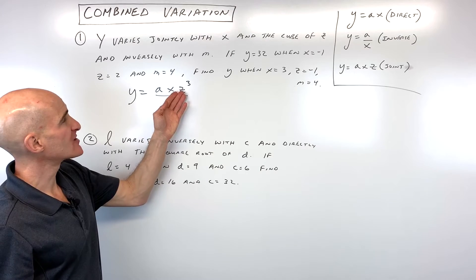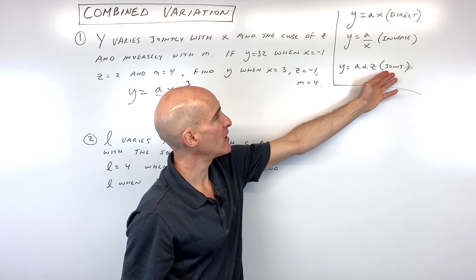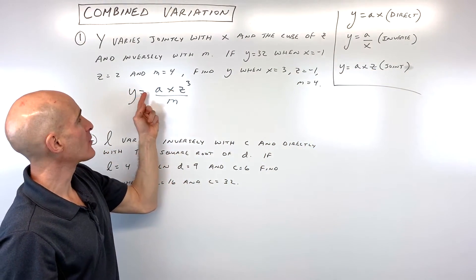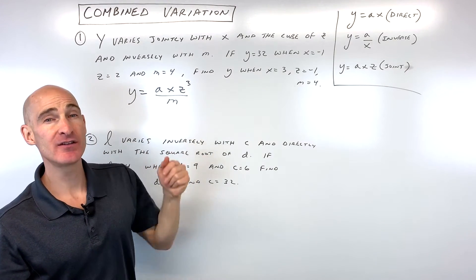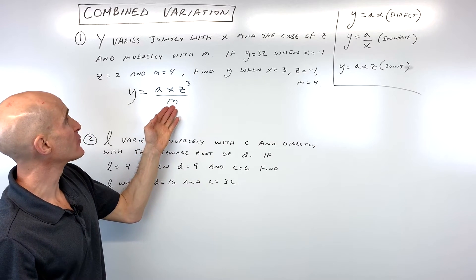Now notice, this looks slightly different than what we talked about here with the joint variation because it said y varies jointly with x and the cube of z, meaning z to the third power, and then inversely with m.